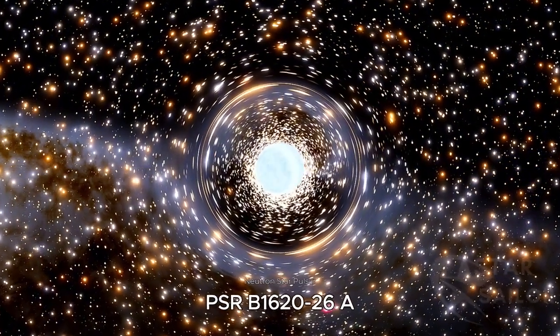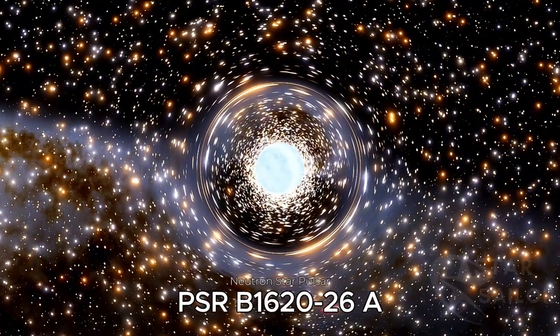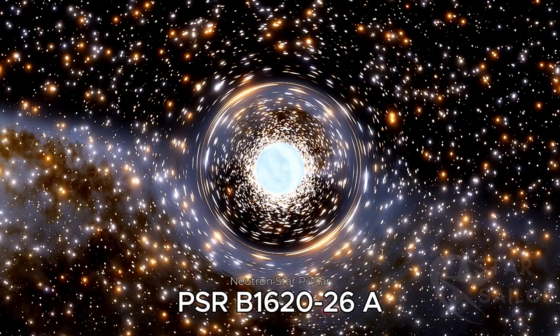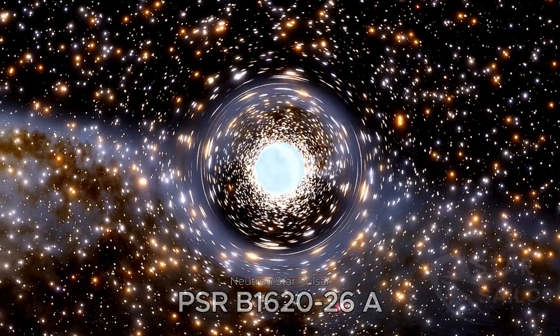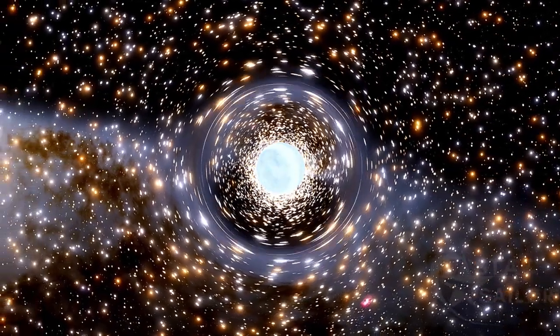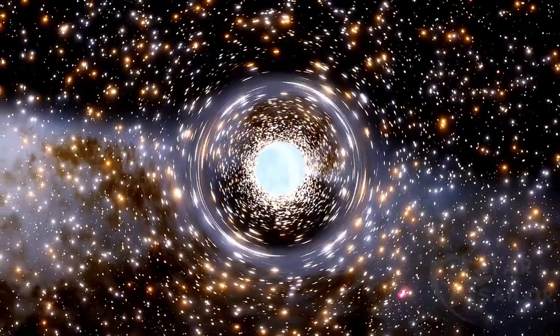A pulsar is a small neutron star formed after the death of stars with masses between 10 and 30 solar masses. These stars undergo a supernova explosion, leaving behind a dense core.